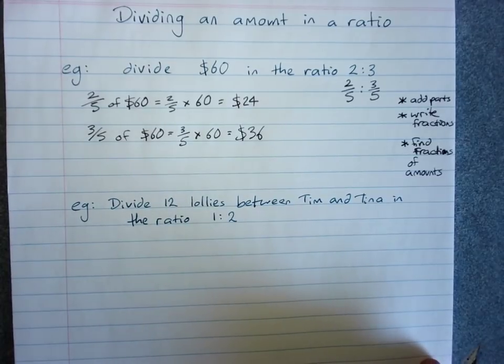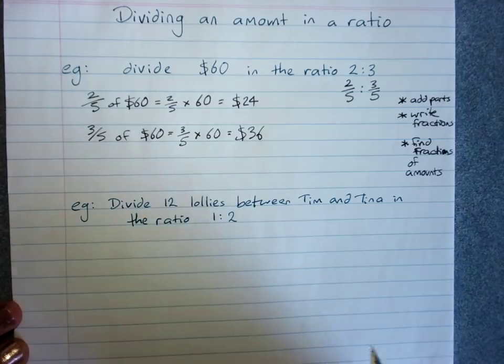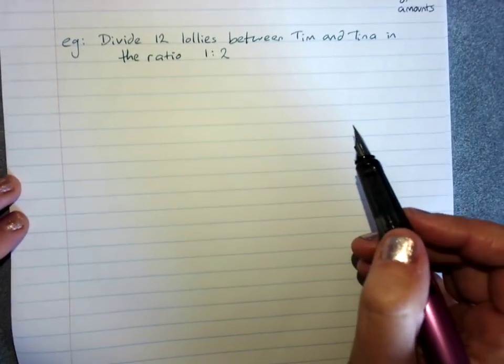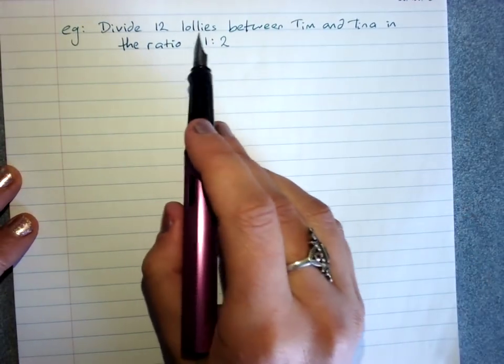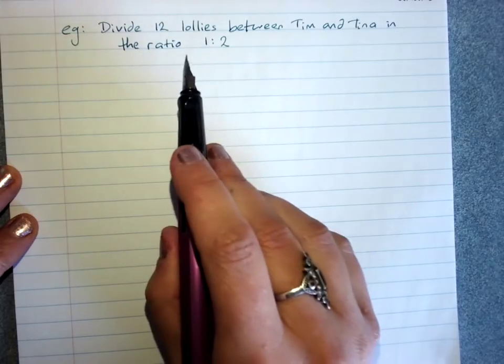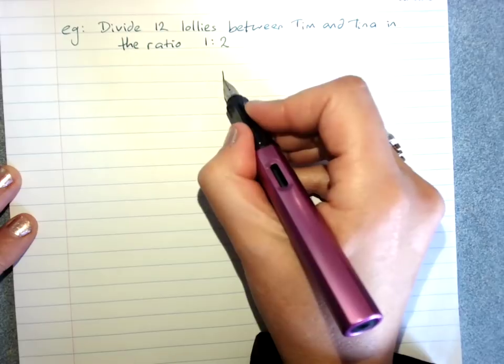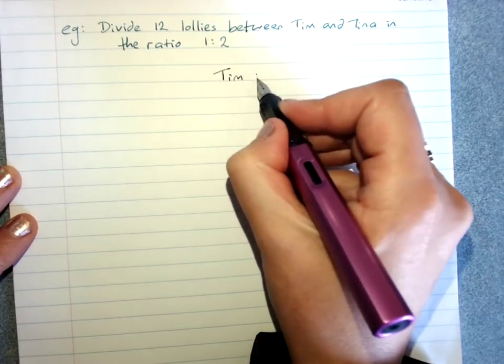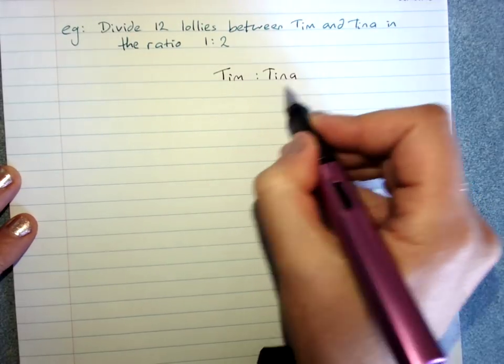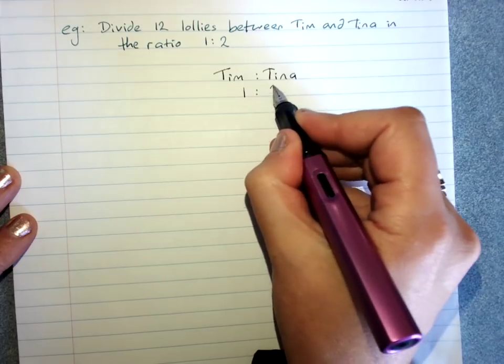There is another method - you can use either method, it's absolutely fine. We'll use this question: divide twelve lollies between Tim and Tina in the ratio one to two. If we know who this is going to, we write Tim to Tina. The ratio is one to two.